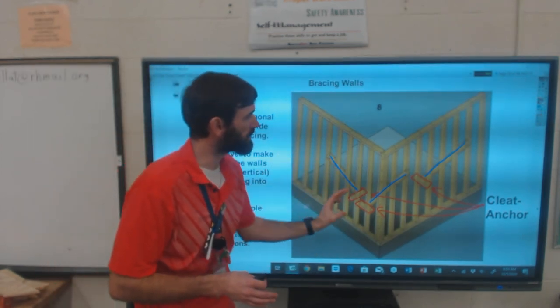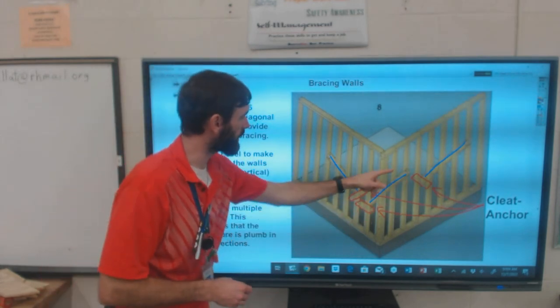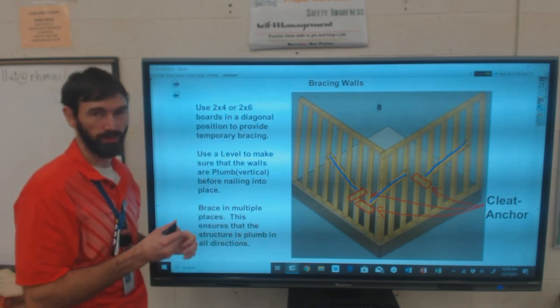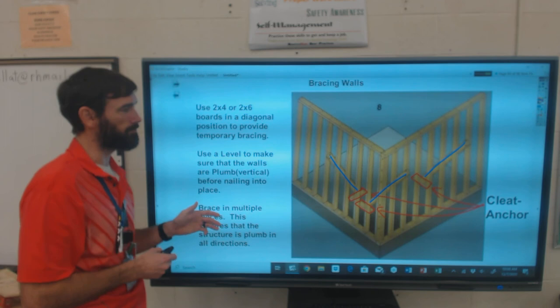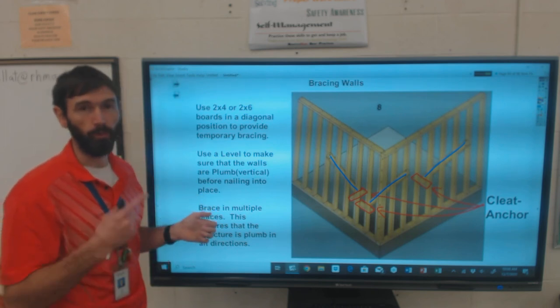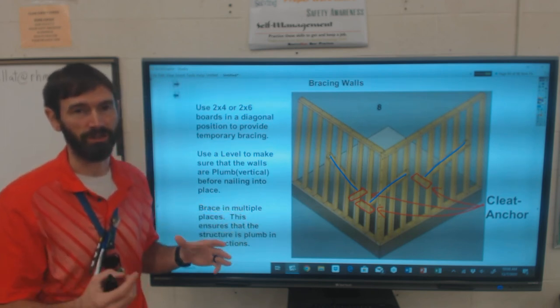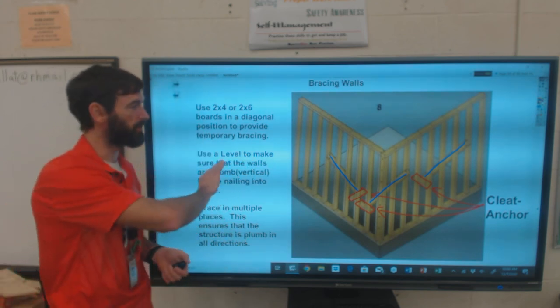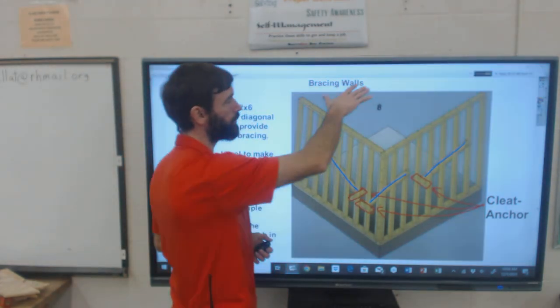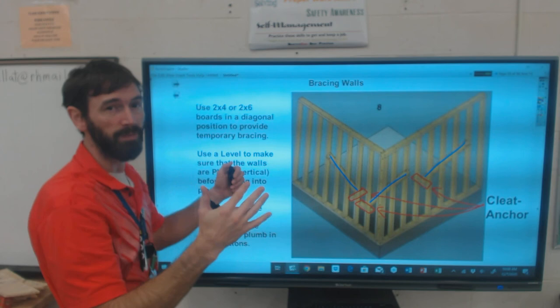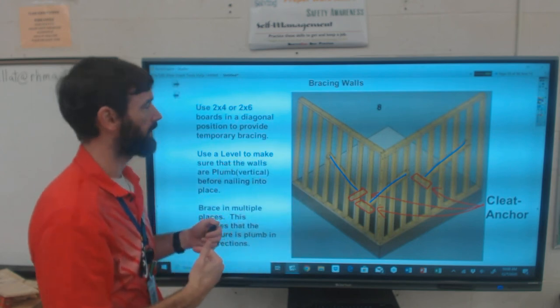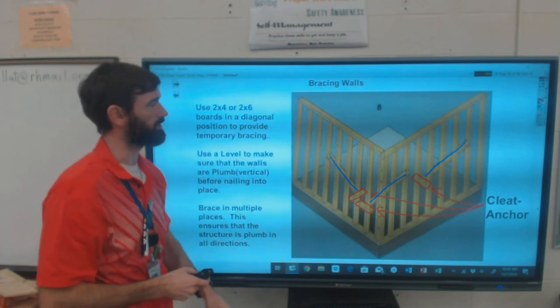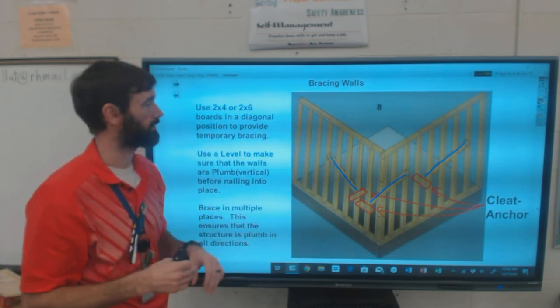So they need the temporary bracing. Again, using the cleats and the anchors and the diagonals here keep all the walls plumb and square. You're going to brace in multiple locations. One brace for the whole wall is not necessarily enough. Those braces stay up until you get the exterior sheathing on, the roof built, and the sheathing on the roof. Once that all happens, then you can pull those braces down. Then the home's not going to shift. But you keep those up throughout the construction process until you get the whole house sheathed and closed down.